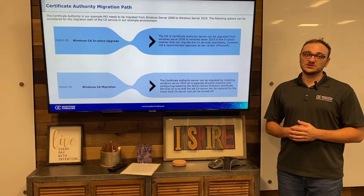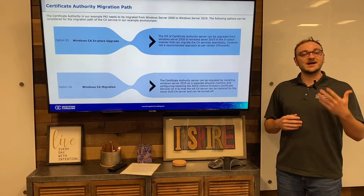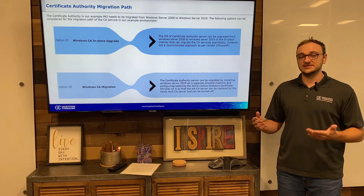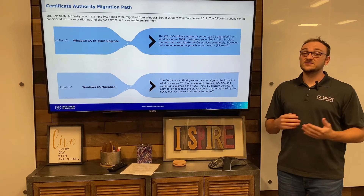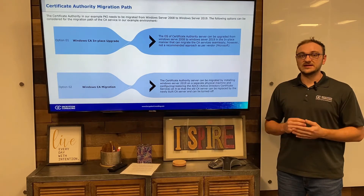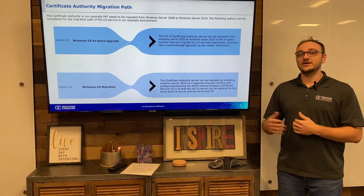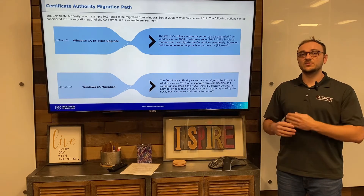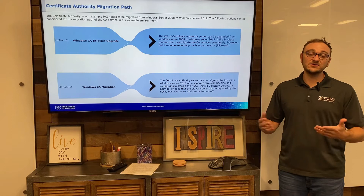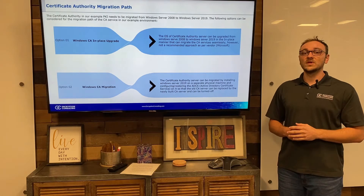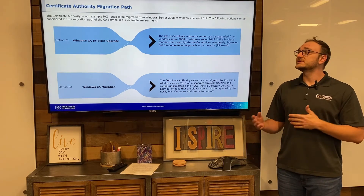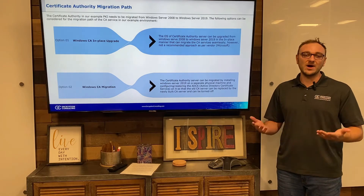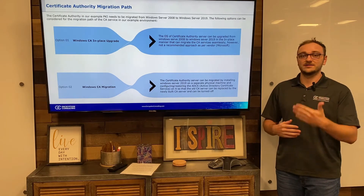The Windows CA migration — option two — is where you actually create another physical server with Windows Server 2019 on it. Instead of just upgrading Windows 2008, you create a completely separate Windows Server on its own machine that works in tandem with the 2008 server until it needs to be decommissioned. Option two is the recommended way, but let's take a look at the pros and cons of each and see why Microsoft would recommend one and not the other.